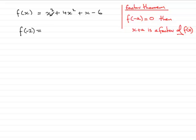We'll let x equal minus 2 in here, so we've got minus 2 all cubed plus 4 times minus 2 all squared plus minus 2 then minus 6. So what have we got?